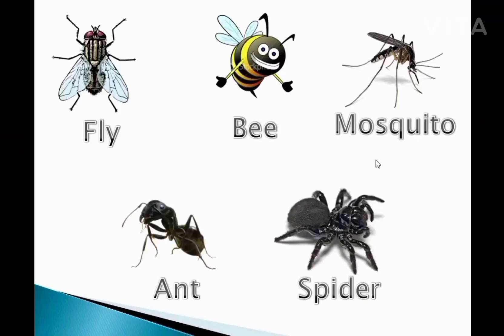Good morning children. Name some small insects. Yes — fly, bee, mosquito, ant, spider. These are very small and tiny insects. Today we will learn about the ant and the spider.